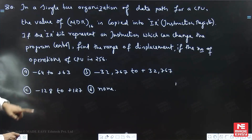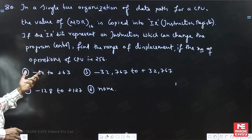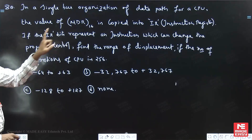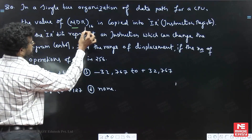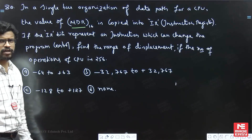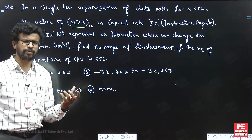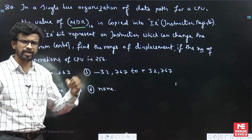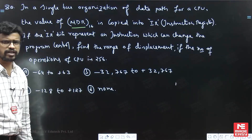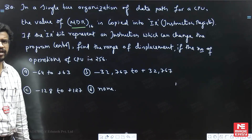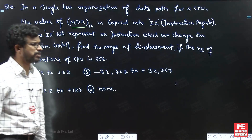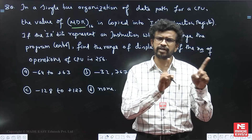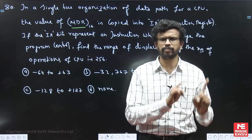In a single bus organization of data path for a CPU, the value of MDR — Memory Data Register — which is used to hold the data before it is transferred to the data bus or when data is accessed from the data bus. There are two important registers: MAR and MDR.